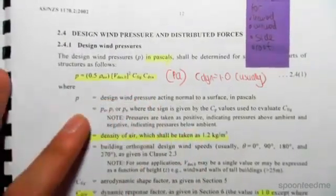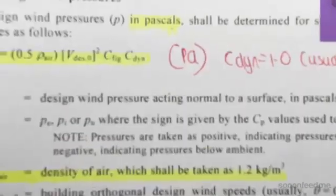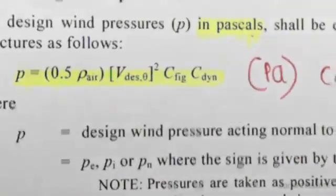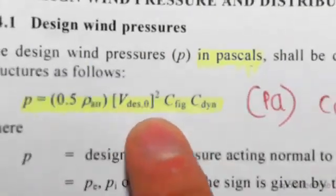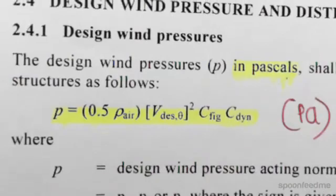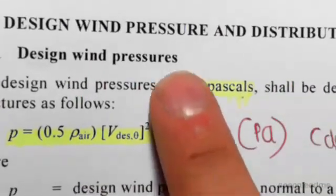If I show you this section, zooming in, we have the pressure equals 0.5 ρ_air V_des,θ C_fig C_dyn. This is the design wind pressure and it's given in pascals.